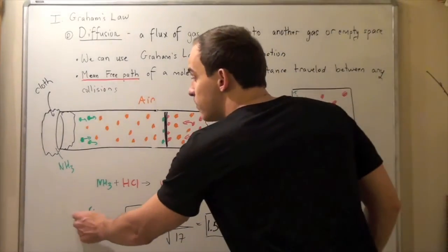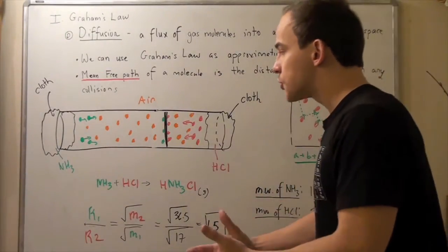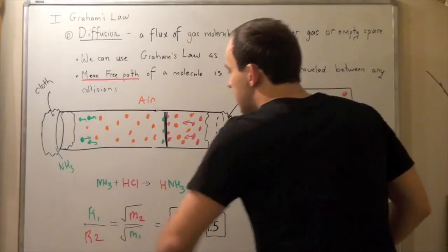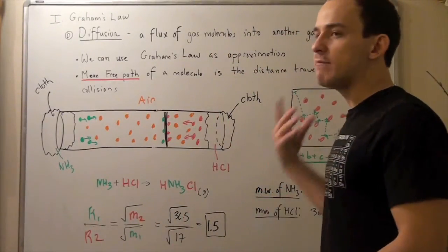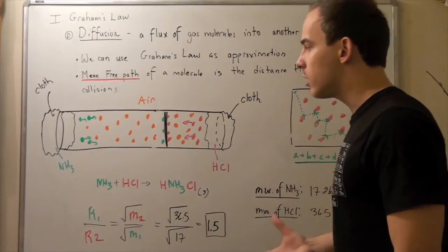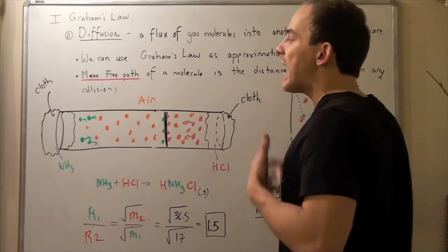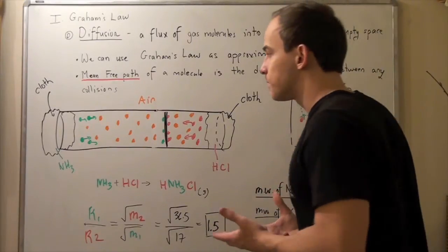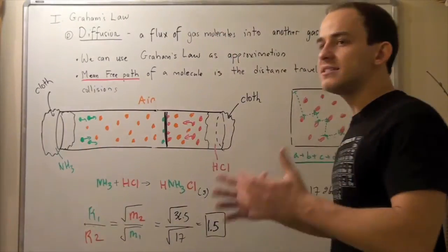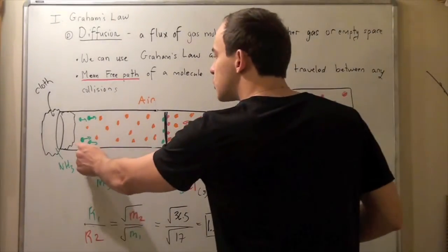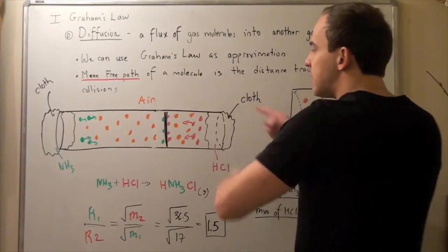So rate of molecule 1 is 1.5 times larger or faster than rate of 2, because 2 is heavier. So it's not going to travel with the same velocity. Velocity will be smaller. Remember, we're assuming constant temperature. So kinetic energies or average kinetic energies are equal. So if they're equal and masses are different, then velocities are also different. So this guy will travel 1.5 times this way than this guy.